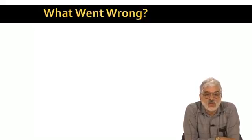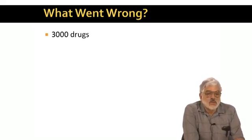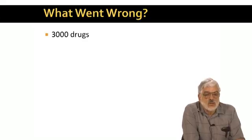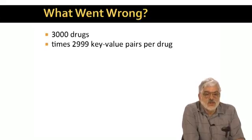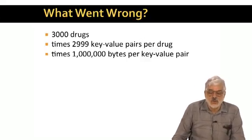Not insubstantial, but you can get it done in an hour by using 10, 16-core compute nodes. The problem is that there are 3,000 drugs. And the mapper for each drug created 2,999 key value pairs, one for each of the other drugs. And for each key value pair, a megabyte had to be communicated from mappers to reducers.